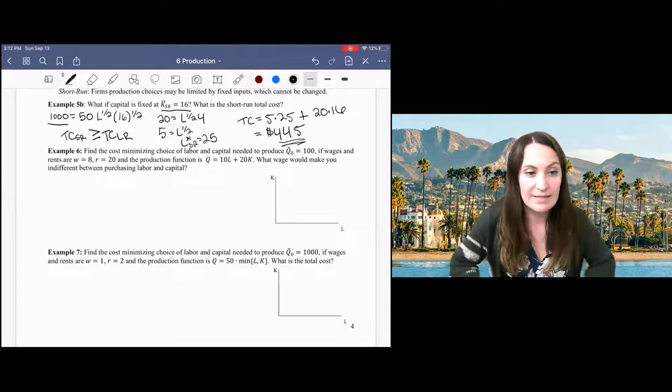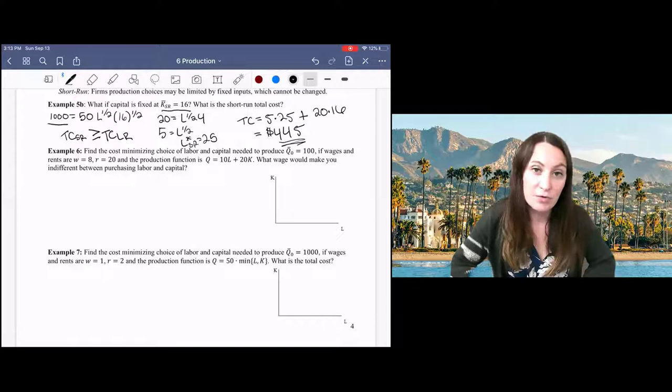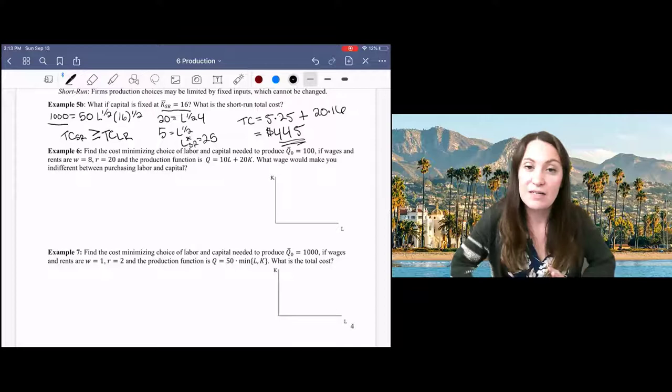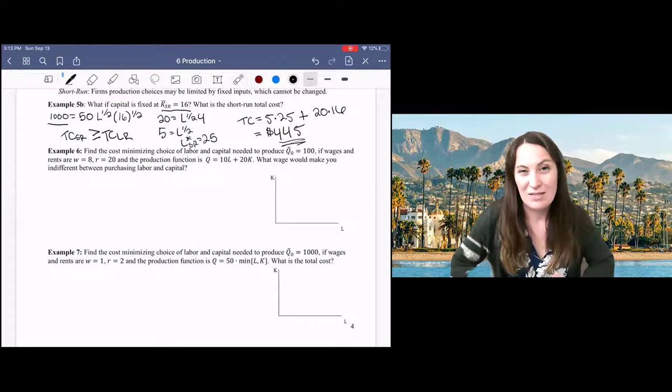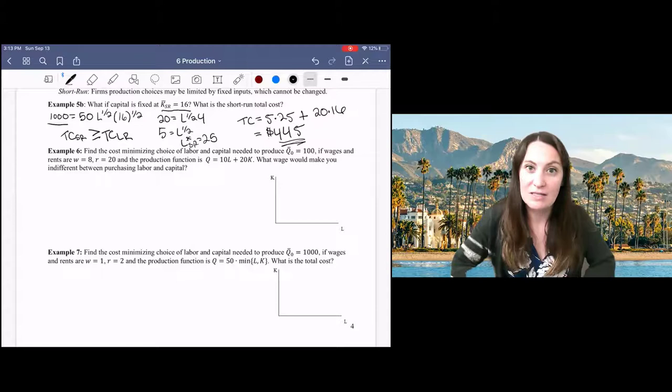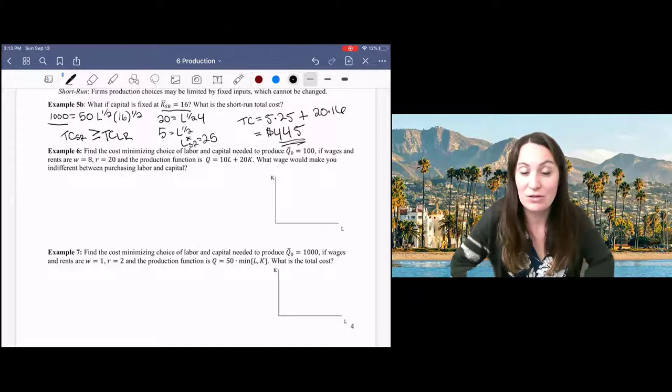The math you'll see is very similar to what we were working with in the consumer choice section, but I just want to go through the interpretation in terms of production because it is a little bit different. So for perfect substitutes, it's difficult maybe to think of labor and capital as perfect substitutes, but I'm sure that you can imagine a business that has a choice between two different input products that are very closely substitutable, and they need to decide which one to use in production.